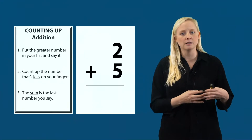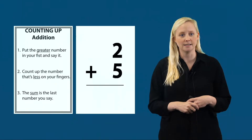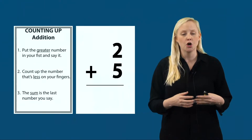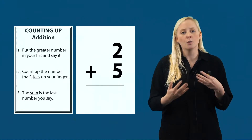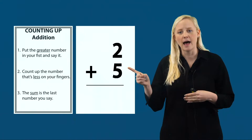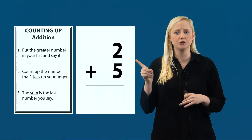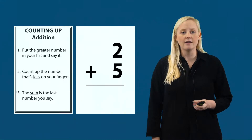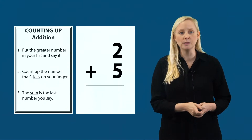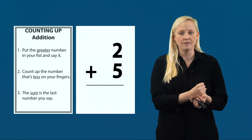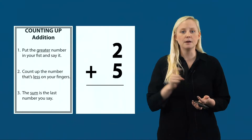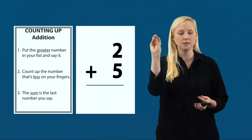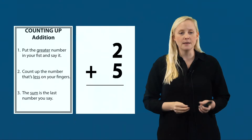We don't want to say words like bigger or smaller because these words talk about quantities. Similarly, we do not want to use words like answer because this is an example of informal math language. Words like sum or difference are really going to prepare students for success. So let's take a look back at our math fact flashcard — two plus five. Step one: put the greater number in your fist and say it. Five is the greater number, so I put five in my fist and say it: five. Then I count up the number that's less, which is two: five, six, seven. The sum is the last number I said, which is seven.